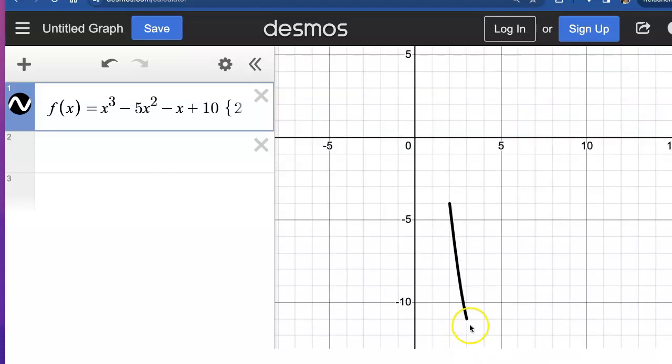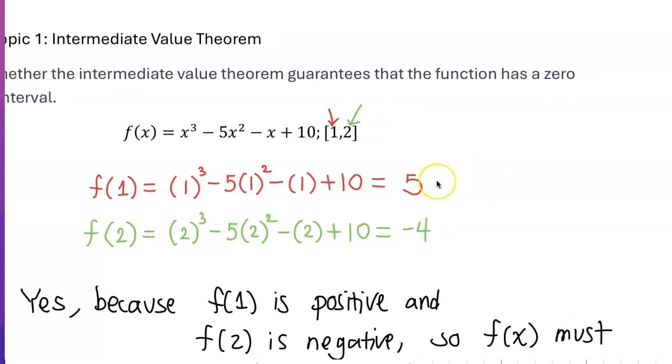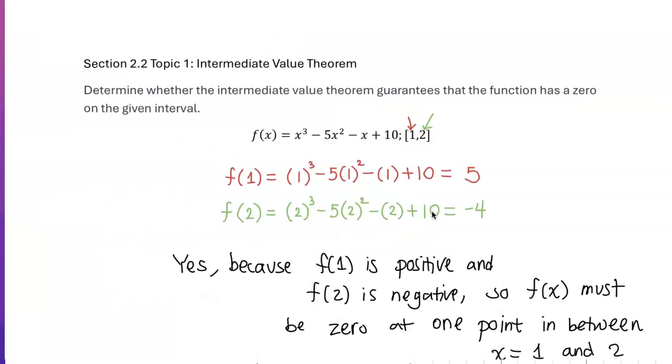So when you do the Intermediate Value Theorem, if the signs of the y values comes out opposite, then you know zero happened in between. But if they're both positive or if they're both negative, then zero is not guaranteed.